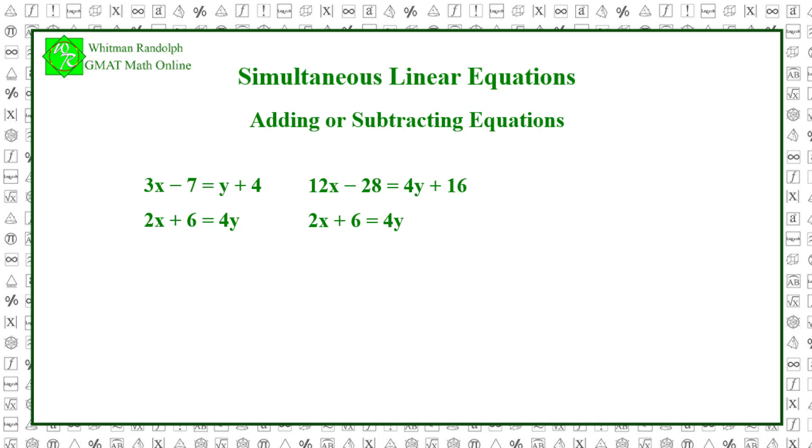12x minus 28 equals 4y plus 16 and 2x plus 6 equals 4y. Now we subtract the left side of equation 2 from the left side of equation 1 and the right side of equation 2 from the right side of equation 1. 12x minus 28 minus 2x plus 6 equals 4y plus 16 minus 4y. That gives us 10x minus 34 equals 16. This eliminates y.